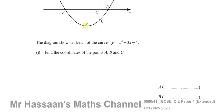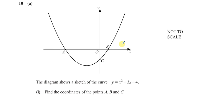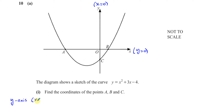To find the coordinates of points A, B, and C, we must realize that the y-axis is actually the line x equals 0, and the x-axis is the line y equals 0. If we want to find where the curve crosses the y-axis, we replace x with 0 in the equation. So we know on the y-axis x equals 0, therefore y equals 0 squared plus 3 times 0 minus 4, which is negative 4. So it crosses the y-axis at the point (0, −4). That's point C.